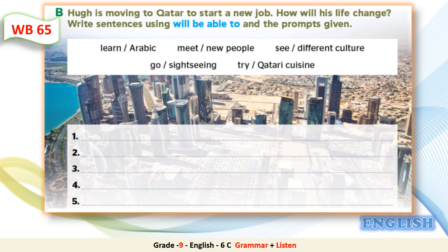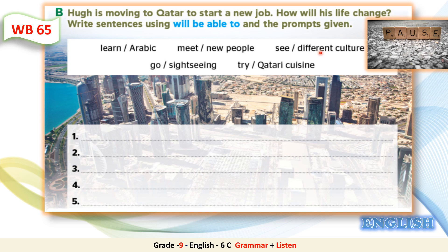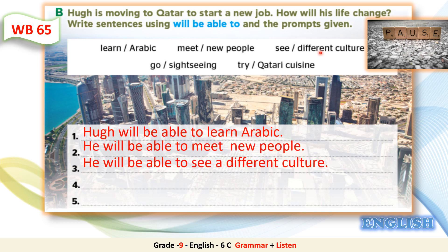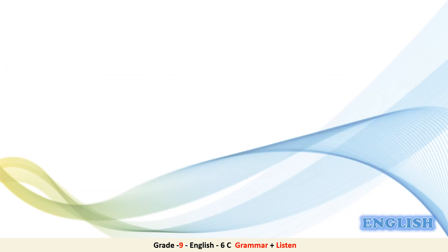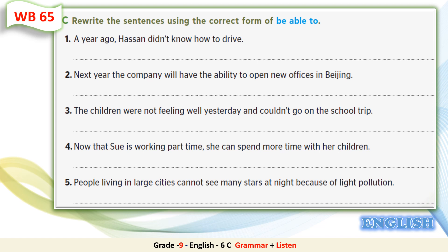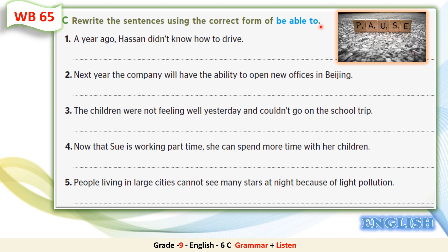Now turn to Workbook page 65 and do Exercise B. Hugh is moving to Qatar to start a new job. How will his life change? Write sentences using 'will be able to' and the prompts given, talking about how Hugh's life will change in the future. Pause the video and do the task. Now please check your answers. Also on Workbook page 65, rewrite the sentences using the correct form of 'be able to.' Pause the video, do the task, then check your answers.